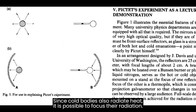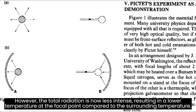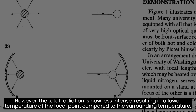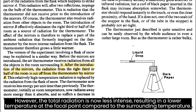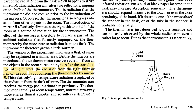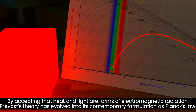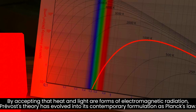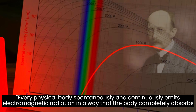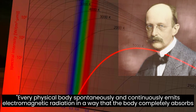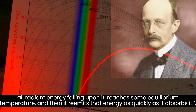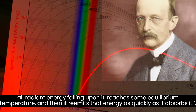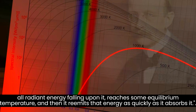Since cold bodies also radiate heat, it is possible to focus their radiation. However, the total radiation is now less intense, resulting in a lower temperature at the focal point compared to the surrounding temperature. By accepting that heat and light are forms of electromagnetic radiation, Prévost's theory has evolved into its contemporary formulation as Planck's law. Every physical body spontaneously and continuously emits electromagnetic radiation in a way that the body completely absorbs all radiant energy falling upon it, reaches some equilibrium temperature, and then re-emits that energy as quickly as it absorbs it.